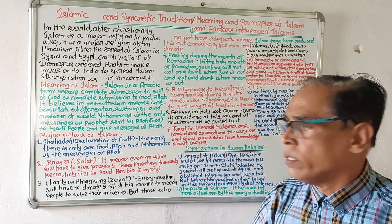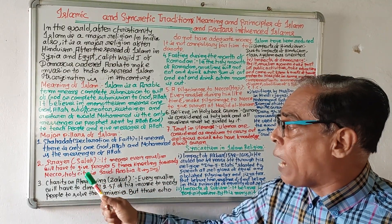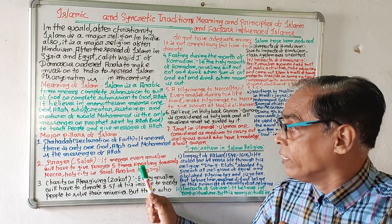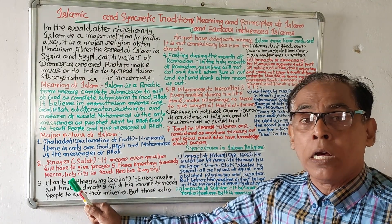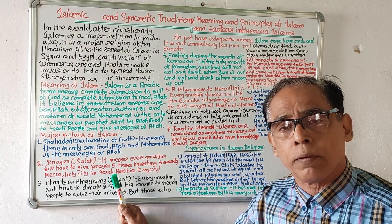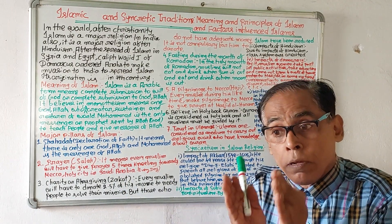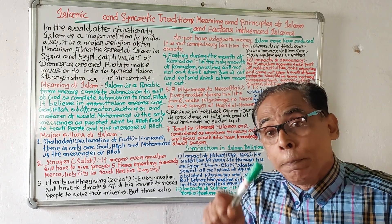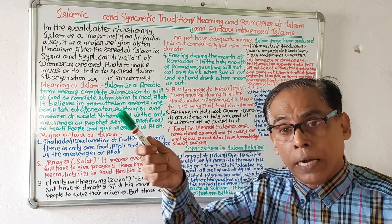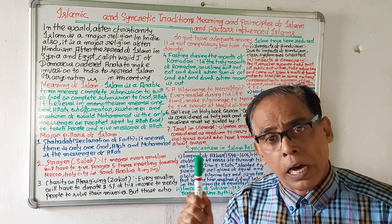Number two is prayer, or Salah. It means every Muslim will have to give prayer five times in a day, kneeling towards Mecca, the holy city of Islam in Saudi Arabia.